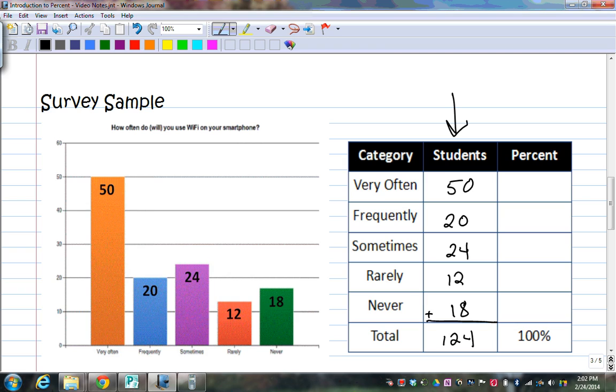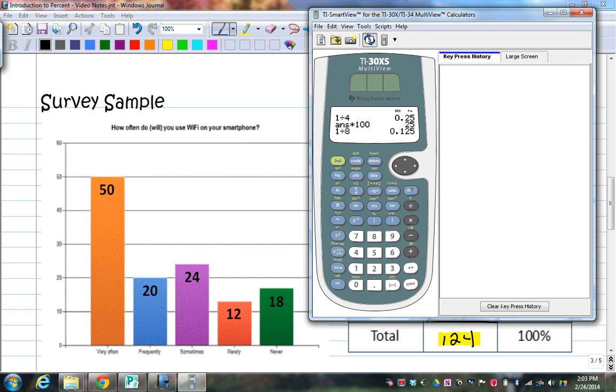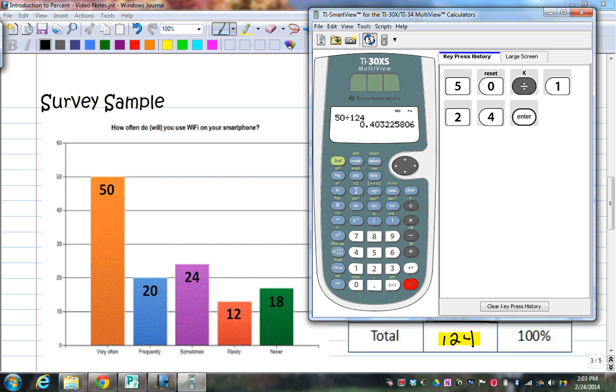Then in order to find the percent, what you're going to do is you'll take whatever the category is. That will be your numerator. And then the total will be your denominator. Because 50 kids out of 124 kids said they use theirs very often. So you would have 50 out of 124. And what percent is that? So in our calculator, I'm going to clear all this out here. I have 50 divided by 124. That is 0.40325806. Oh my gosh. Well, I want to multiply by 100 or move the decimal two places to the right. So I'm going to multiply this by 100. And there's my percent. Now I'm not going to write down all those digits. What I'm going to do is I'm going to round this to the tenths place. The tenths place is the first digit after decimal. So I'm going to say this is 40.3%.